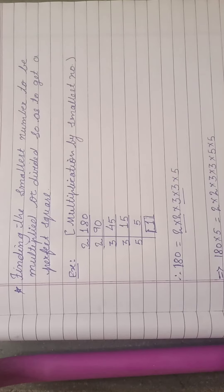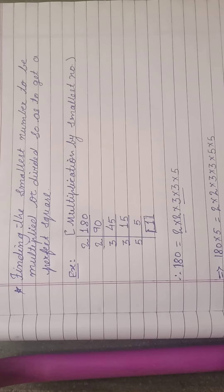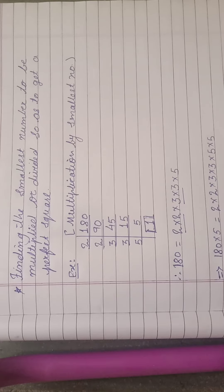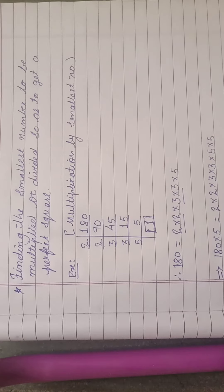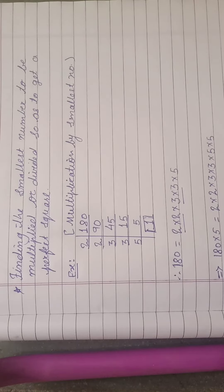Good morning dear students. Our today's topic is finding the smallest number to be multiplied or divided so as to get a perfect square number. I know the topic is a little lengthy, but when we see the solved example, you will definitely enjoy the sum. Yesterday we have seen two examples.